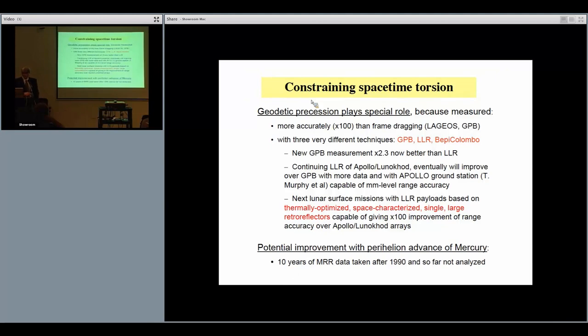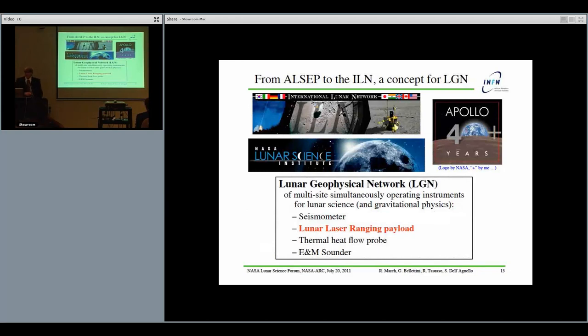Geodetic precession has a special role because it can be measured better than frame dragging and also because it is measured with three very different experimental techniques: Gravity Probe B, which is superconducting gyroscopes; lunar laser ranging; and BepiColombo, which is radio science. In this way, if you're measuring the same effect in three different ways, you are protected against systematic errors. At the moment GPB has the best measurement of geodetic precession. However, GPB is over—there are no more data in the future. So the continuing lunar ranging to the Apollo and Lunokhod will eventually improve the previous best measurement of 0.64 percent to a value better than GPB, especially because we have since now three, four years a high-performance ground station—APOLLO in capital letters—led by Tom Murphy, and because there is hope to have new lunar surface missions which can put new reflectors on the Moon.